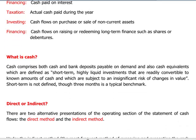Cash under IAS 7 is actually cash and bank deposits, along with cash equivalents, which are defined as short-term, highly liquid investments that are readily convertible into known amounts of cash, and which are subject to insignificant risk of changes in value. Short-term typically means three months, and the classical example would be treasury bills.